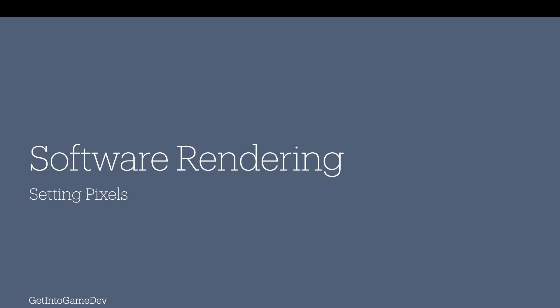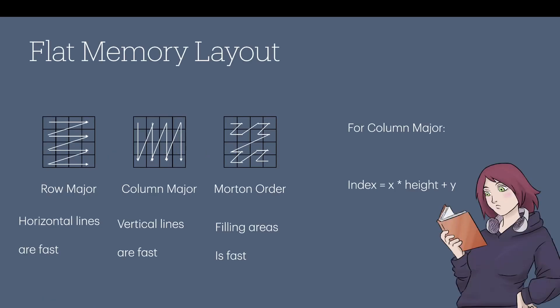All righty, so welcome back. Software rendering. In this video, we're going to be setting pixels. Now, what I've got is for my frame buffer, I've got a NumPy array of numbers where every number represents the color of that corresponding pixel. We could have done this as a two-dimensional NumPy array, but I'm going to be using a flat memory layout. In other words, even though it represents a two-dimensional array of pixels, those elements are stored in a single array.